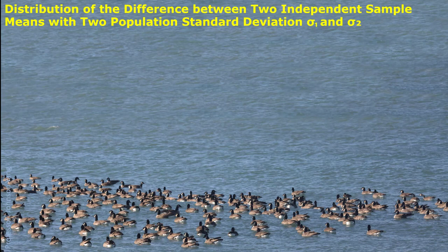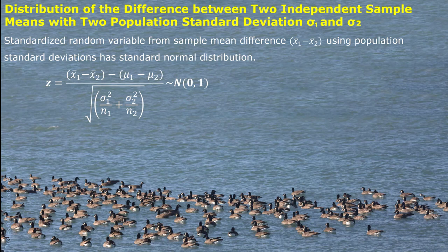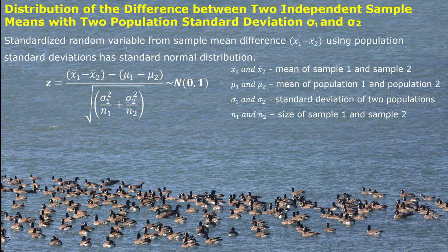The standardized random variable of the sample mean difference follows standard normal distribution — again, if population standard deviations sigma 1 and sigma 2 are known.